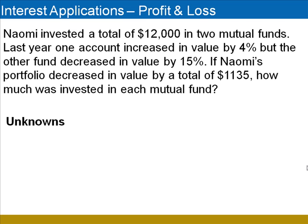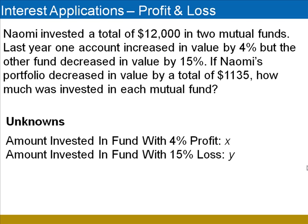We begin by declaring our unknowns. In this problem, there are two unknowns: the amount invested in the first mutual fund and the amount invested in the second mutual fund. We'll let X and Y represent these two unknowns.